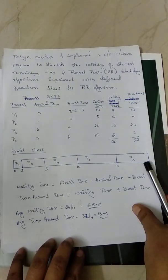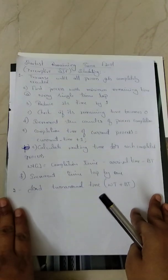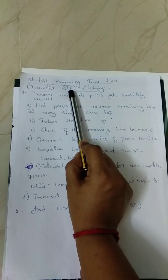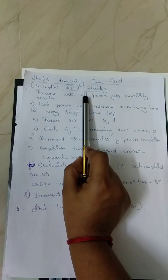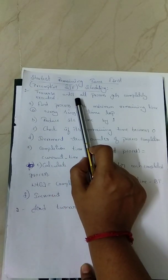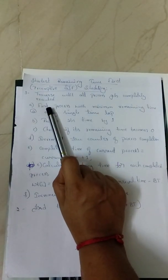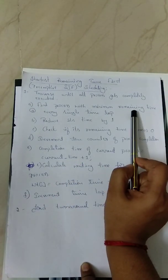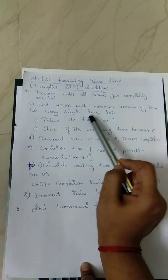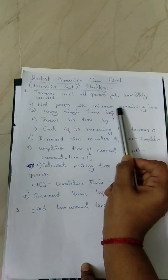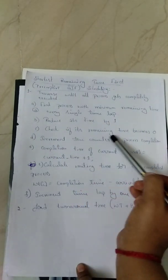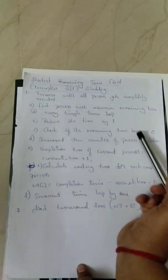With this understanding, we'll now look at the coding part. But first, let's see the design. SRTF is nothing but preemptive SJF scheduling. We will traverse until all processes are completely executed, going through all the process data given. As per shortest job first, we find the process with the minimum remaining time (burst time) at every single time step. Once found, reduce its remaining time by 1, then check if its remaining time becomes 0.